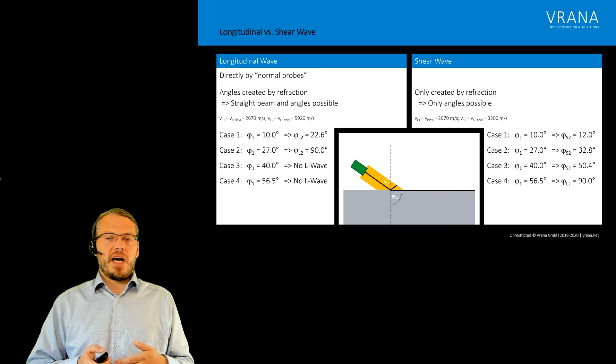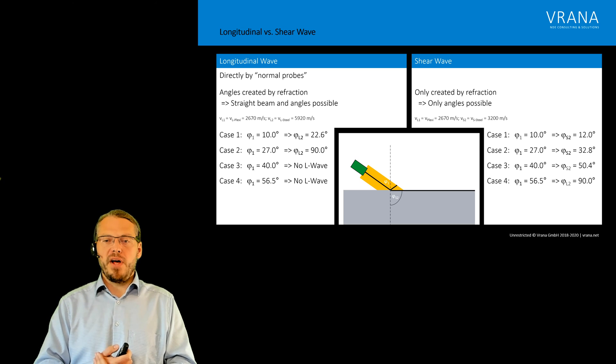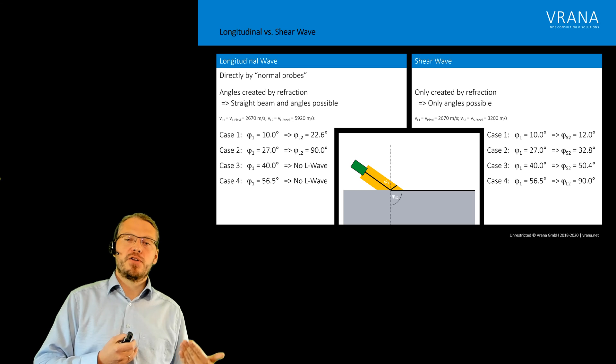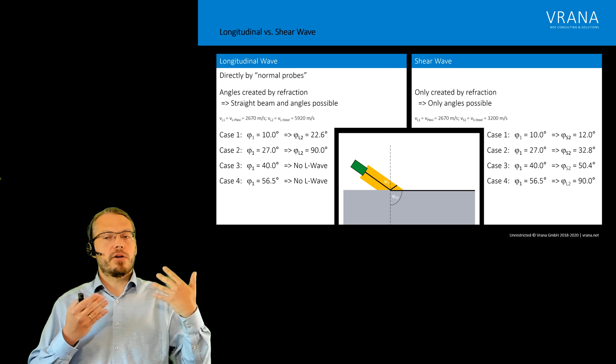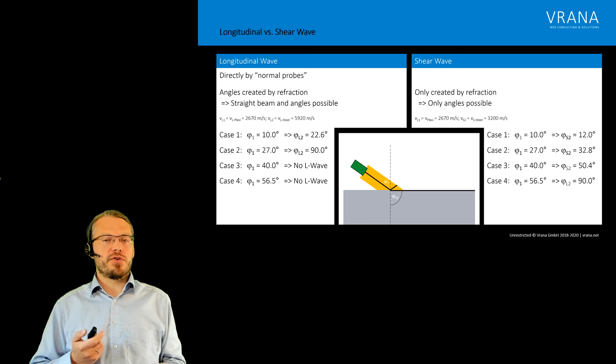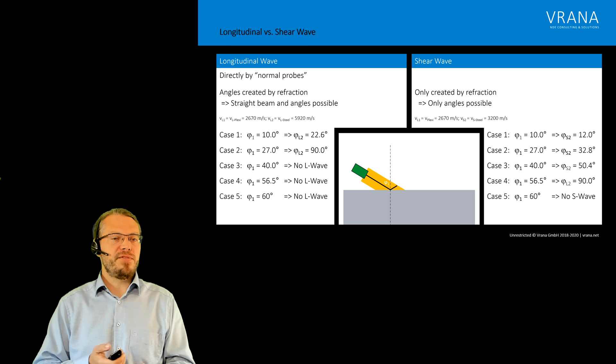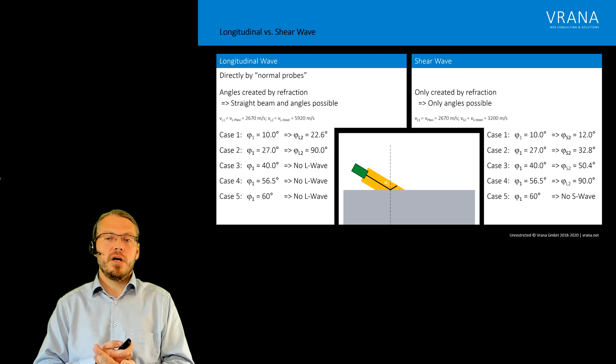Once we reach the 56.5 degrees, then we are coming to the second critical angle. Because now our shear wave is traveling on the surface of our component. And once we come above the 56.5, we have no wave introduced into the component. We only have reflection.